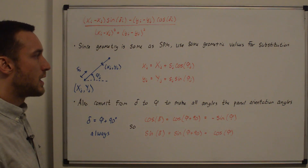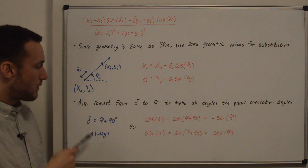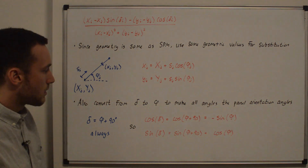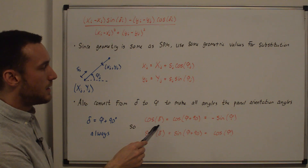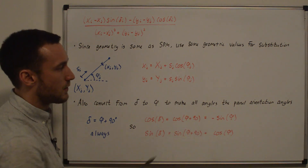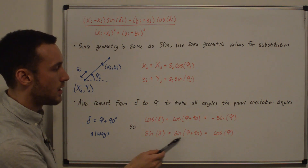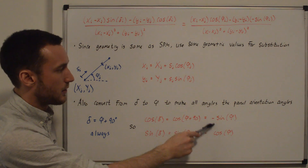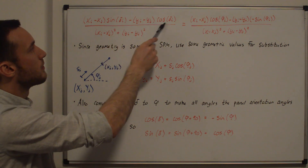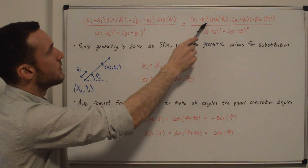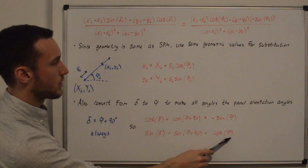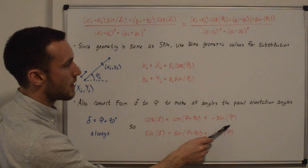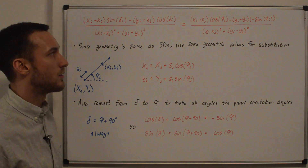We also convert from the delta_i variable to phi by using the relation delta = phi + 90 degrees from the panel method geometry video. Therefore cosine(delta_i) = cosine(phi_i + 90°) = -sin(phi_i), and sine(delta_i) = sine(phi_i + 90°) = cosine(phi_i). Substituting into the expression, the numerator becomes: (xi minus xj) times cosine(phi_i) minus (yi minus yj) times negative sine(phi_i), with the denominator staying the same.